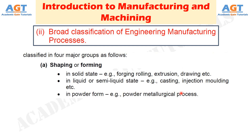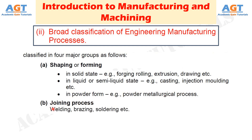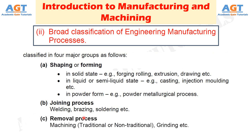Number 2: Joining Processes, which includes processes like welding, brazing, soldering, etc. Number 3: Removal Processes, which includes processes like traditional or non-traditional machining, grinding, etc.